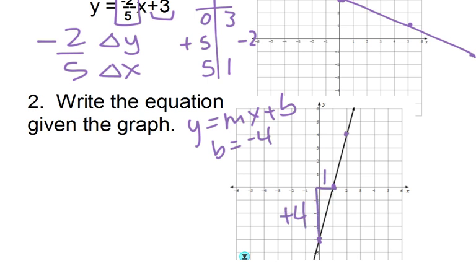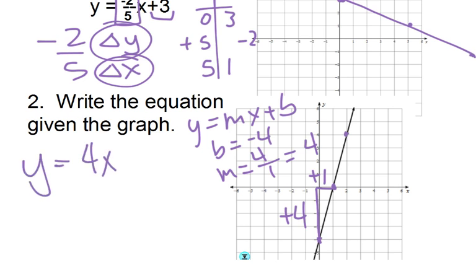So going up a positive 4 and to the right 1. The change in y is on top, so for my slope, it's a positive 4 over my change in x, which is positive 1, which I can reduce to just 4. So I get y equals 4x minus 4, or plus negative 4, either one.